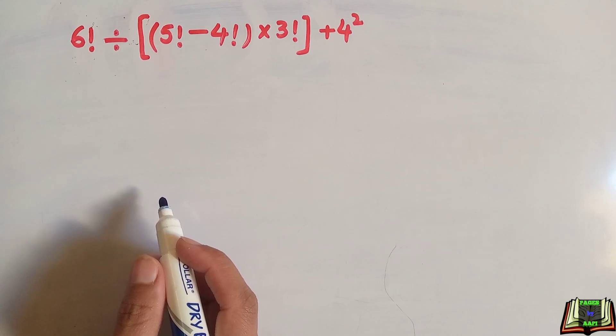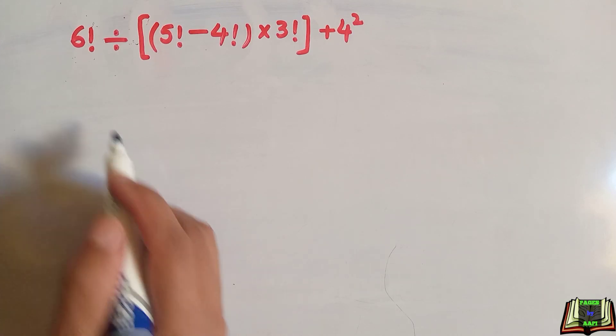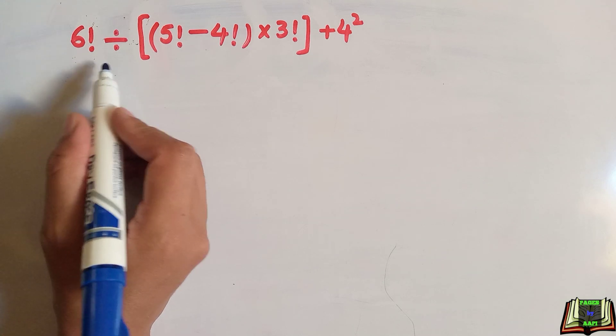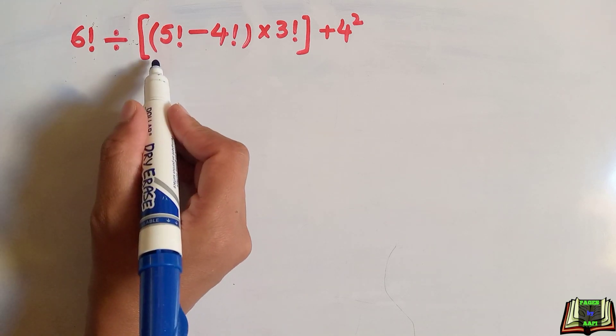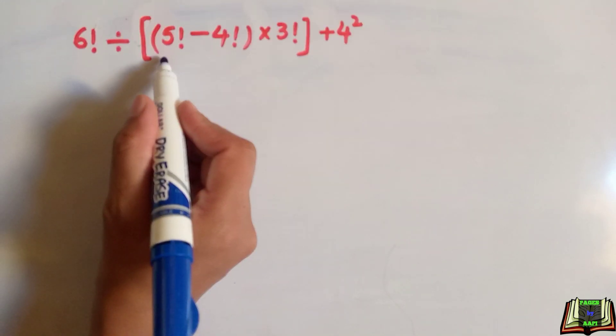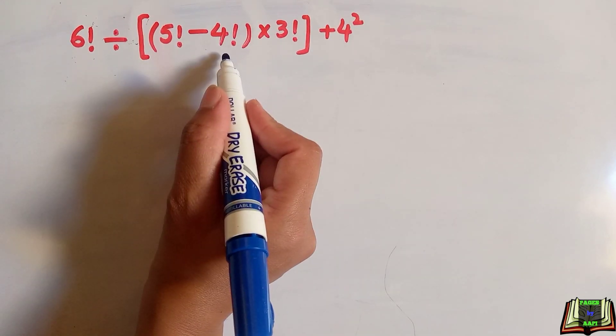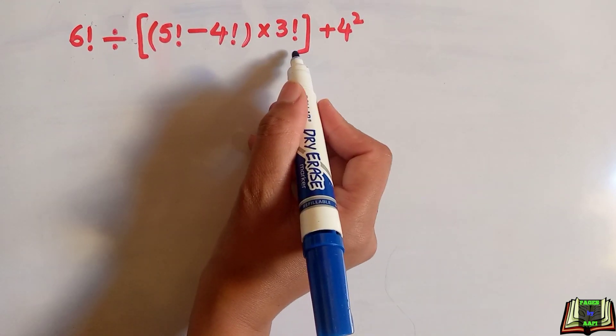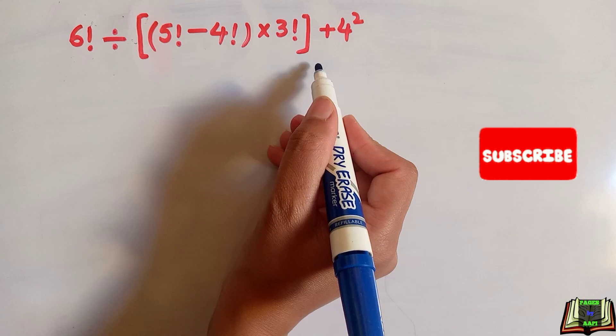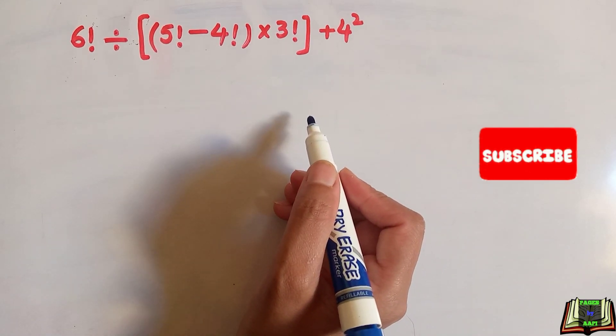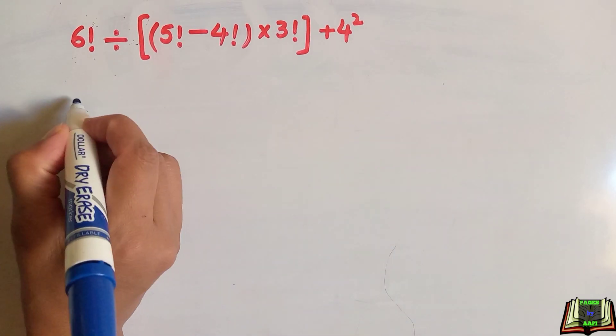You will love this factorial question after watching the video. The question is 6 factorial divided by open bracket, open parenthesis, 5 factorial minus 4 factorial, close parenthesis, multiply by 3 factorial, close bracket, plus 4 squared. We will rewrite this to look more simple.